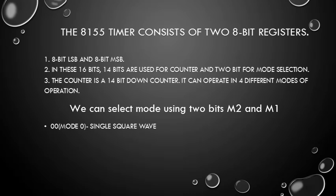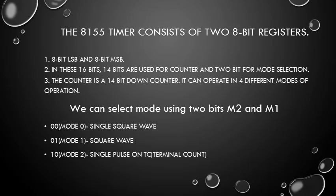We select the mode using two bits, M2 and M1. If both M2 and M1 are 0, it is Mode 0 and a single square wave is generated. When M2 is 0 and M1 is 1, it is Mode 1 and a continuous square wave is generated. For M2=1, M1=0, Mode 2 is selected and a single pulse on terminal count is generated. For M2=1, M1=1, it is Mode 3 and a pulse on every terminal count is generated.